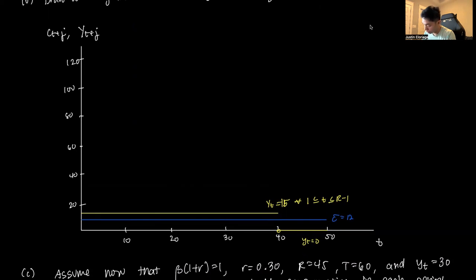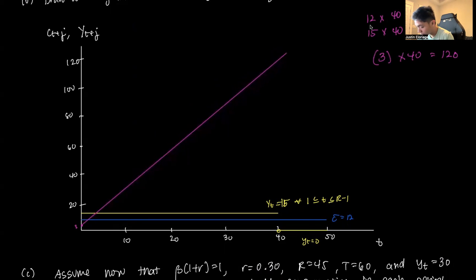Notice the initial savings will be 3, because 15-12=3. At period 1, savings is 3. Then 12 times 40 is total consumption and 15 times 40 is total income at 40 periods. Subtracting these gives 3 times 40, which equals 120. So at period 40 you reach maximum savings of 120.